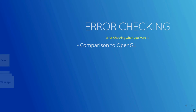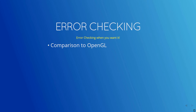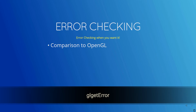OpenGL error checking is generally always in effect, slowing things down whether you are in development mode or running a shipping version of your app. Behind the scenes, the driver is always doing parameter validation, bounds and format checking. You, the developer, use glGetError to figure out what went wrong and when.